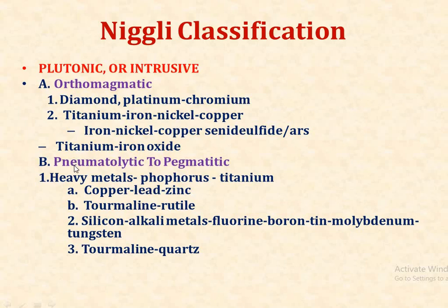The second category is pneumatolytic to pegmatitic. In this group, heavy metals, phosphorus, titanium, copper, lead, zinc, tourmaline, silicon, alkali metals, fluorine, boron, tin, molybdenum, and tungsten are generally deposited.